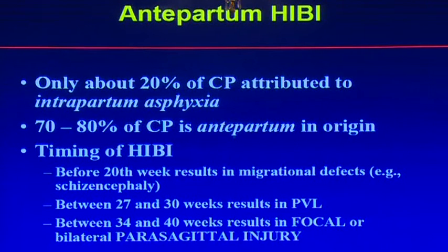The timing of hypoxic ischemic brain injury is also important. If it happens before the 20th week, during migration and brain development defects, you get different problems from defective nerve migration. Between 27 to 30 weeks you can have periventricular leukomalacia, and in term babies from 34 to 40 weeks, you get focal or bilateral parasagittal injuries.